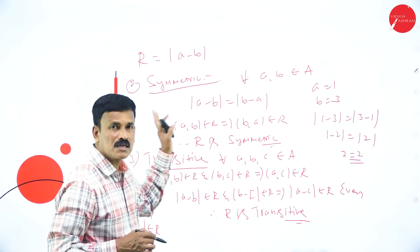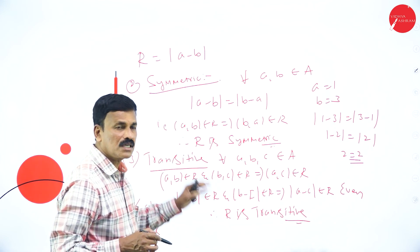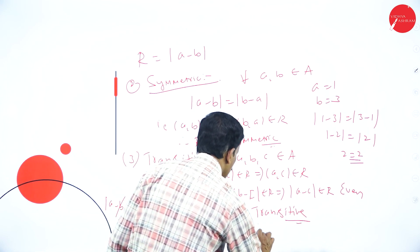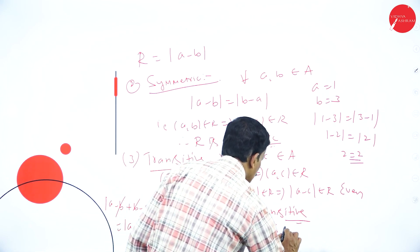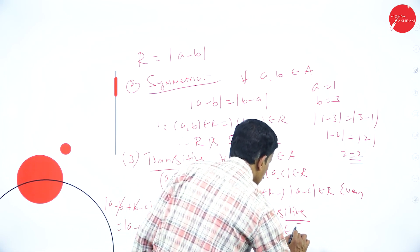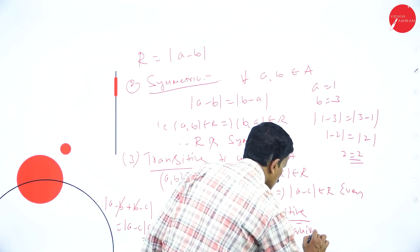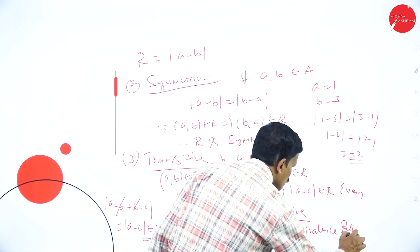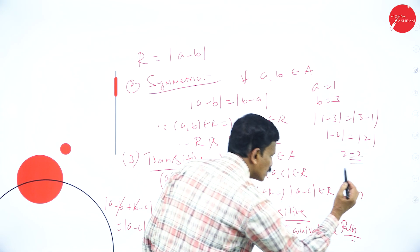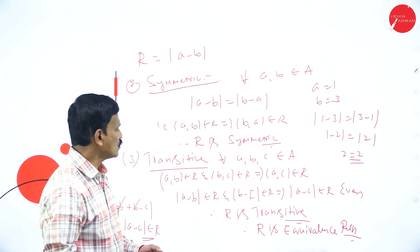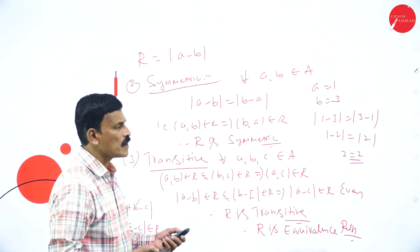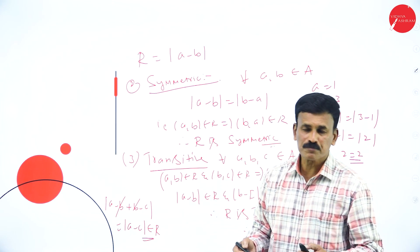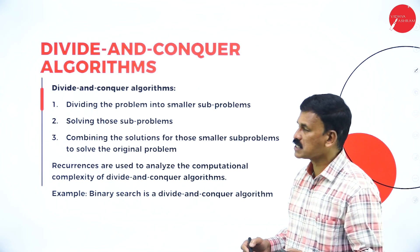Since R is reflexive, symmetric, and transitive, R is an equivalence relation. This is how we verify equivalence relations; you may expect this type of problem in the exam.